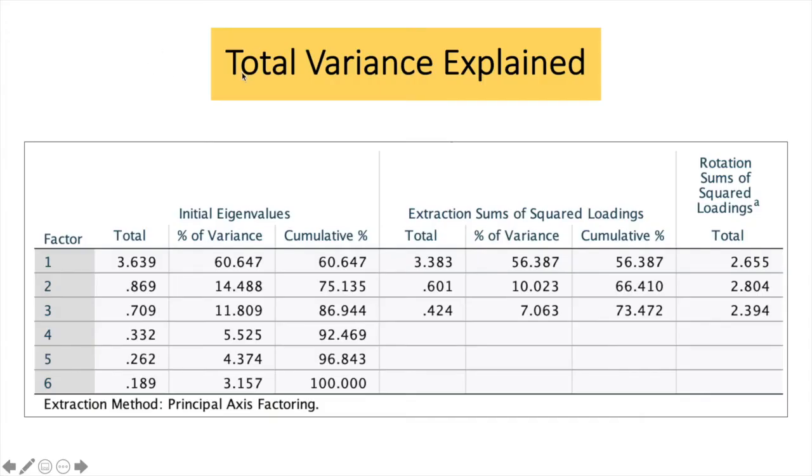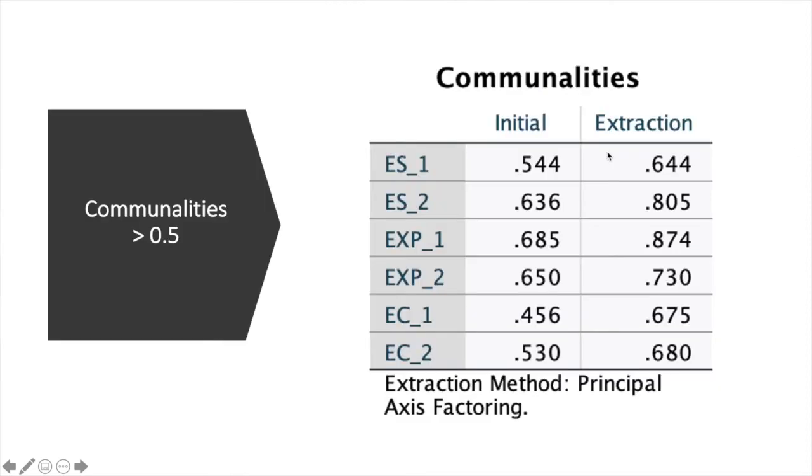Next, we look into total variance explained. As we instructed SPSS, we have three factors here. And the total variance is 73.5%. Next, we check the communalities. And if we look into all the values here, the value must be greater than 0.5. And by looking into all these values, we are good to go. It's greater than 0.5.